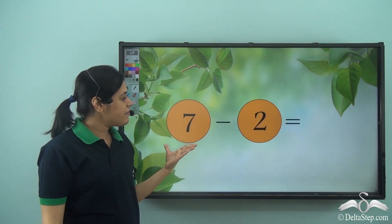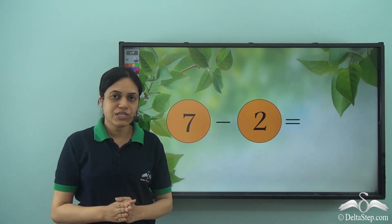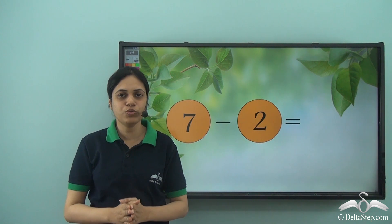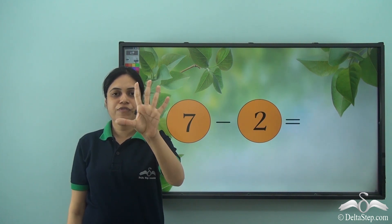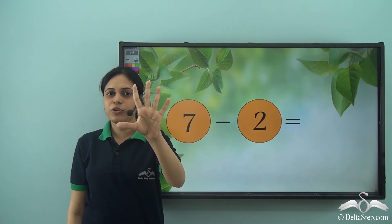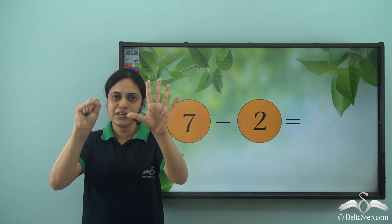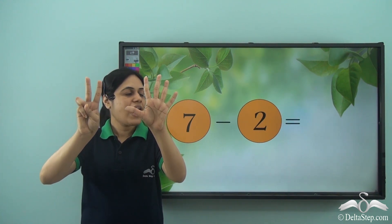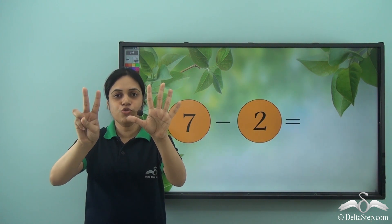Now I have seven minus two. So first I need to open seven fingers. Let's do that. One, two, three, four, five. And what about the sixth finger? Well, I need to use the other hand. Six, seven.